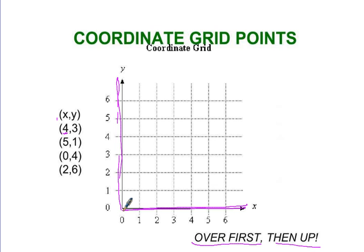4, 3. Over 4, up 3. It's just like flying in an airplane. You're going to go down the runway and then take off. Now planes don't go straight up in the air like that, but hopefully that helps you to remember.